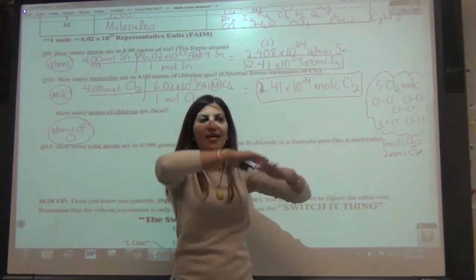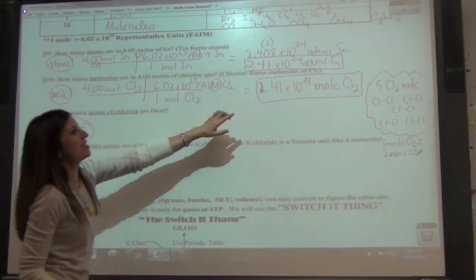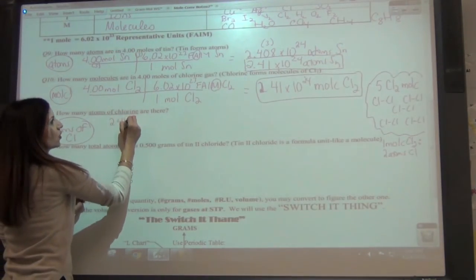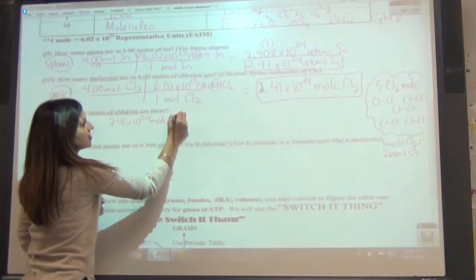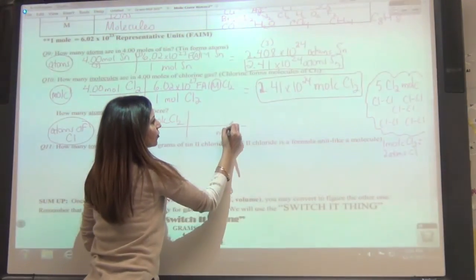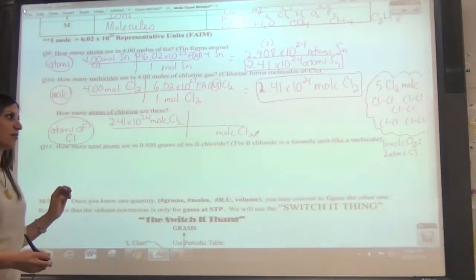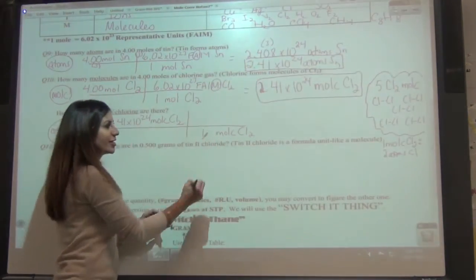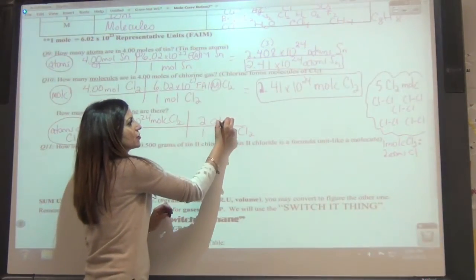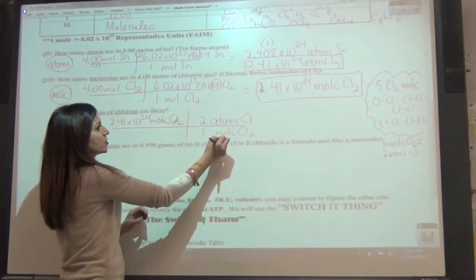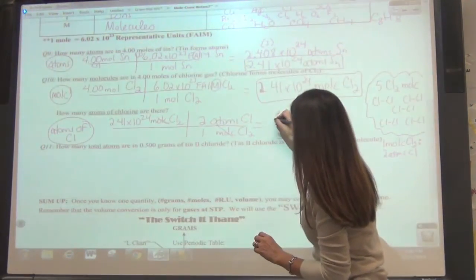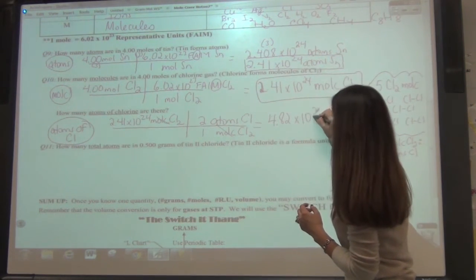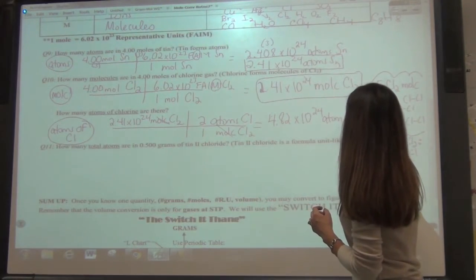We're going to take the previous answer since we're already in molecules — no need to start back at moles. So starting with 2.41 times 10 to the 24th molecules of Cl2, throw in a bridge, cross opposite — molecules of Cl2 on the bottom. Use the ratio: in 1 molecule, there are 2 atoms of Cl. The molecules cancel out, leaving atoms, giving 4.82 times 10 to the 24th atoms of Cl.